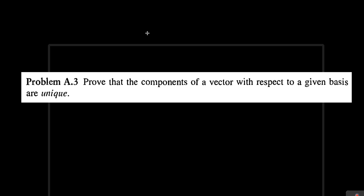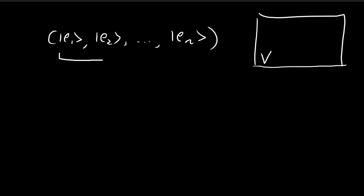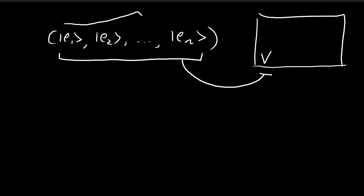In this problem, we're going to prove that the components of a vector with respect to a given basis are unique. So we have a vector space V, and within this vector space, I'm going to pull out a bunch of vectors to form a basis. This means any vector within this vector space can be expressed as a linear combination of these vectors, and all these vectors are linearly independent.